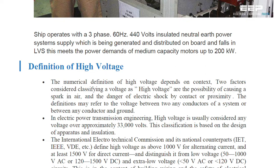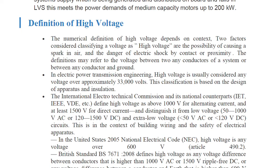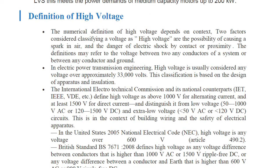The numerical definition of high voltage depends on the context. Two factors considered for classifying voltage as high voltage are: the possibility of causing a spark in the air, and the danger of electric shock by contact or proximity. The definition may refer to the voltage between any two conductors of a system or between any conductor and ground.